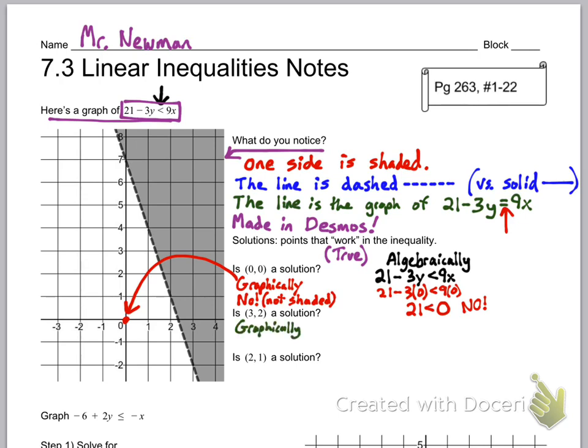Alright. Let's try (3, 2). Is (3, 2) a solution? Well, graphically, it's sitting right there. That's in the shaded side. So, yes, it is a solution because it is on the shaded side. Let's check algebraically if it's a solution. Well, I know that 2 is my y, so I'm going to put 2 for y. And I know that 3 is x. I'm going to put a 3 in for x. Now that I've plugged those in, let's figure out what those are equal to. 3 times 2 is 6. 9 times 3 is 27. And 21 minus 6 is 15. 15 is less than 27. So, yes, this is also a solution algebraically. And like I said, any time it will be a solution graphically, it will also be a solution algebraically.